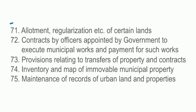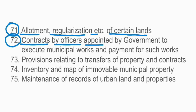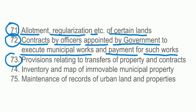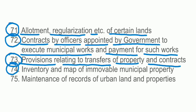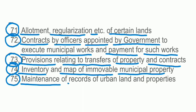Section 71: Allotment, regularization, etc. of certain lands. Section 72: Contracts by officers appointed by government to execute municipal works and payment for such works. Section 73: Provisions relating to transfers of property and contracts. Section 74: Inventory and map of immovable municipal property. Section 75: Maintenance of records of urban land and properties.